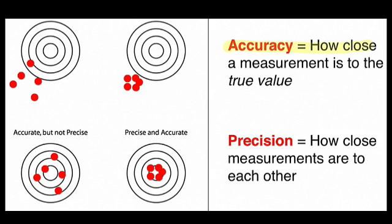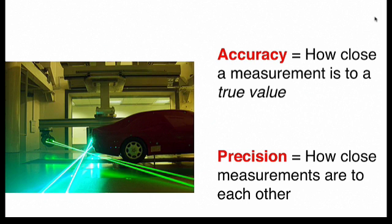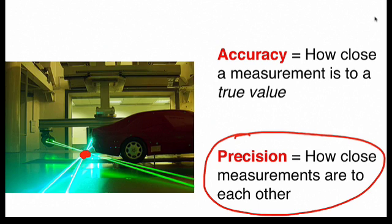Thus, accuracy is how close a measurement is to the true value, and precision is how close measurements are to each other. For example, if we want to measure fluid velocity at this point, we can gauge precision by taking repeated measurements and see how close they are to each other. So we hold the conditions the same, measure velocity over and over, and then we can gauge precision.